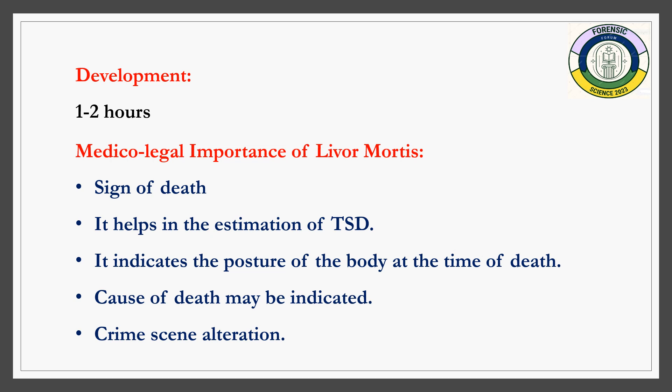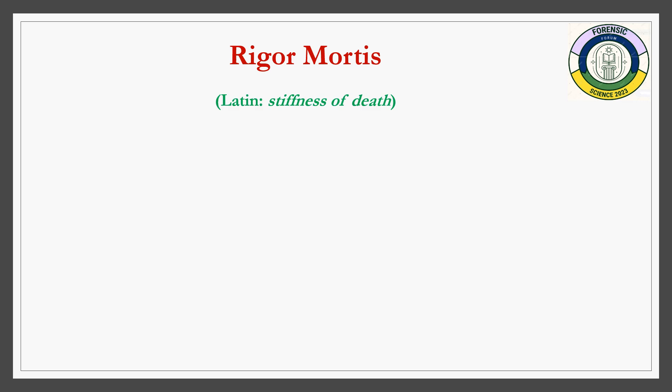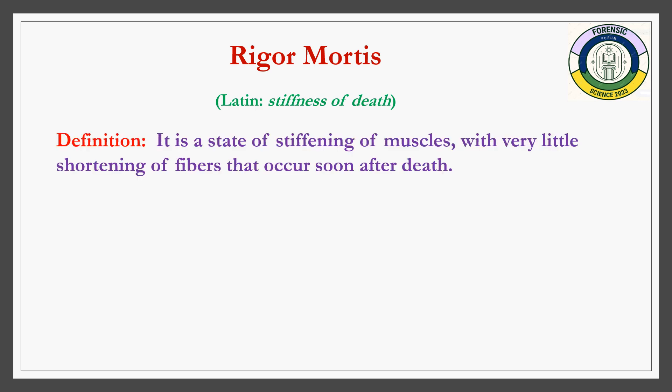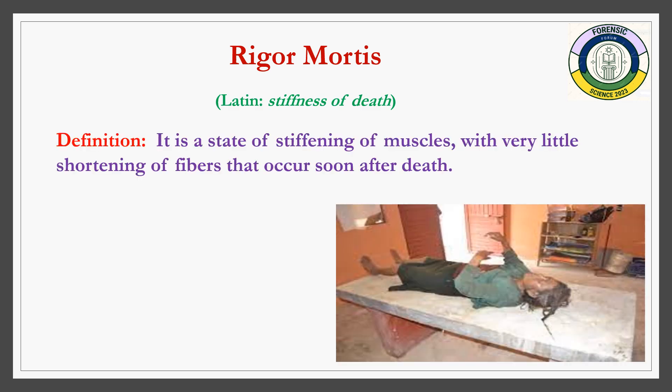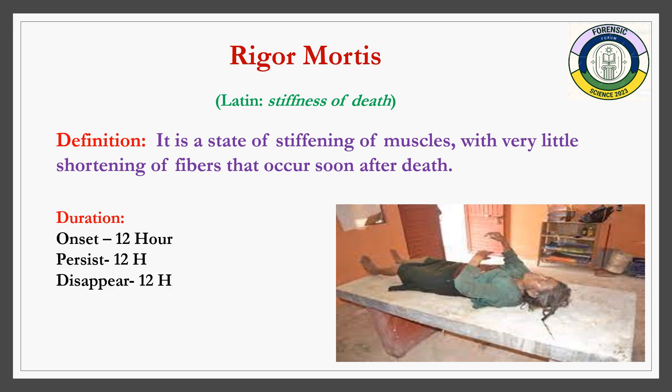Livor mortis also indicates the posture of the body at the time of death, and based on its developed color, the cause of death may be predicted. It also reveals crimes involving alteration of the body position.